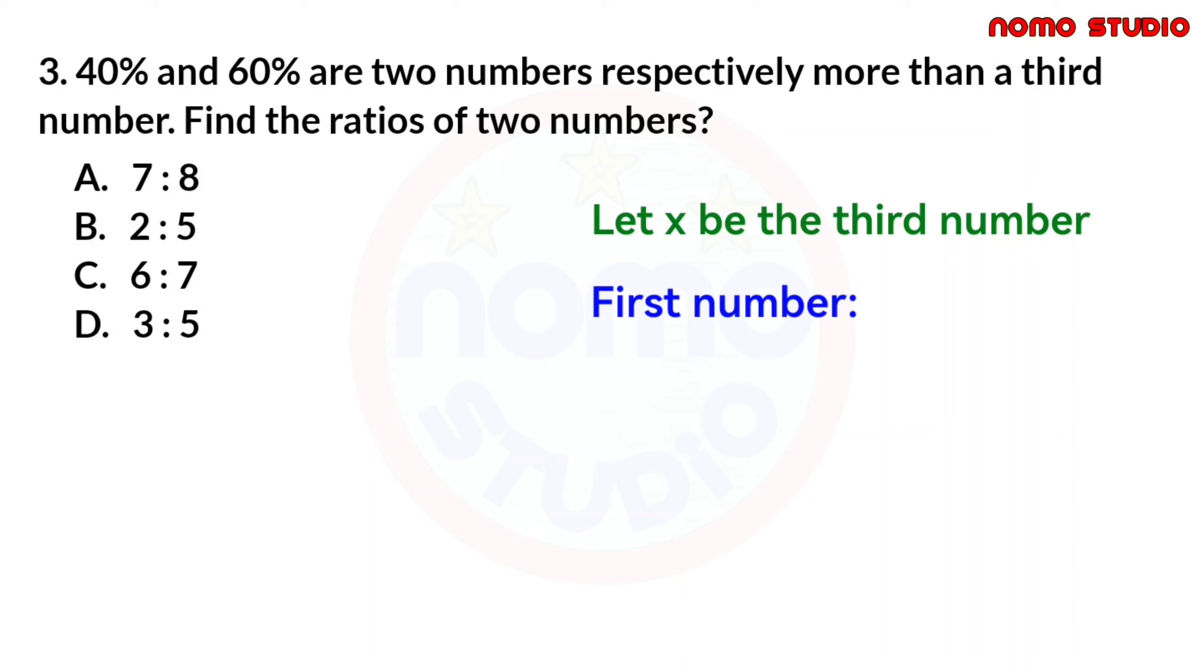Now, if our third number is 100%, since we don't know what number that is, there's no specific number. So, if 100% is x, since the first number is more by 40%, therefore, this is 140x over 100. Now, if 140x over 100 is our first number, we know that the second number is also more by 60% than the third number. This is 160x over 100.